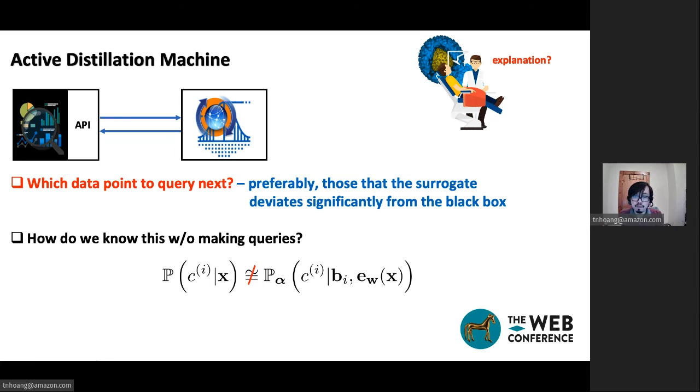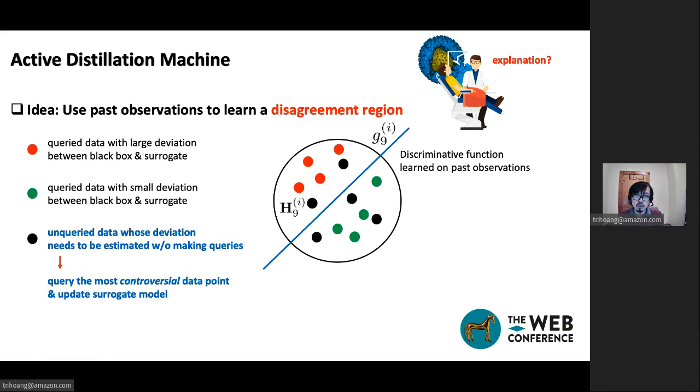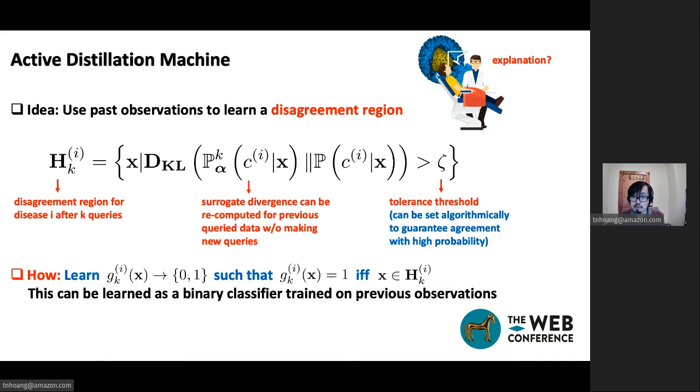But how do we know that the output of the black-box and the surrogate will be in disagreement without actually sending in the query? So one idea is to use past observation to learn a disagreement region. And the disagreement region here is defined to be the set of data point, input point to be precise, such that the corresponding predictive outcome produced by the local representation model and the cloud model will be highly divergent. Meaning that the Kullback-Leibler divergence will be above a certain tolerance threshold which can be set algorithmically to guarantee agreement with high probability.